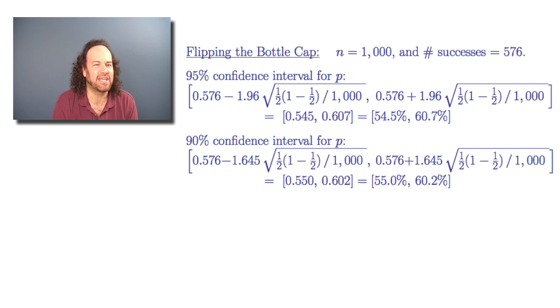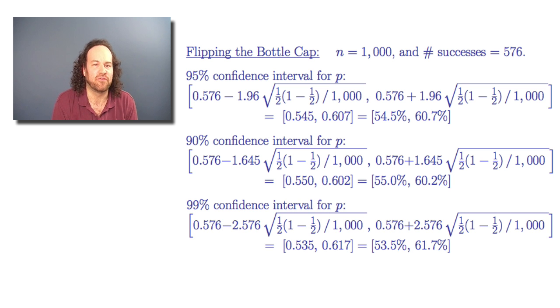If we wanted to be really careful and wanted to be really sure, we wanted to be 99% confident, then we would take a wider interval, this time using the value 2.576, in order to get a confidence interval which is a little bit wider, but we're even more confident that the true value of p is somewhere in this range.